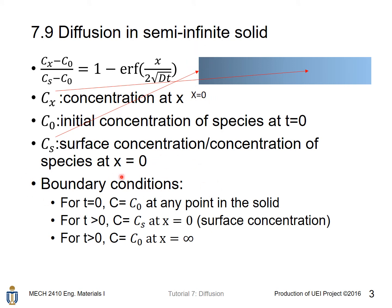The boundary condition for this equation is: for time equal to 0, C is equal to C0 at any point in the solid. That means initially, within the solid, the concentration of atoms is the same throughout the solid. For time greater than 0, Cs is the concentration of species at x equal to 0. That means at the boundary position, the surface concentration is kept at Cs.